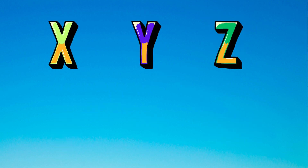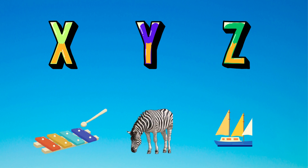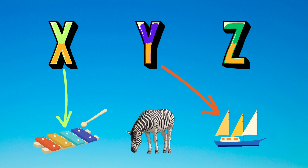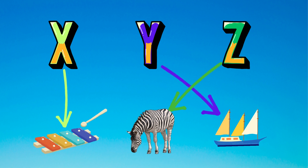X, Y, Z. X for Xylophone. Y for Yacht. And Z for Zebra.